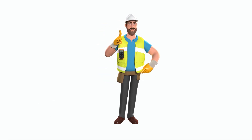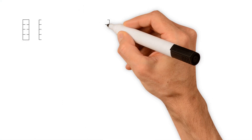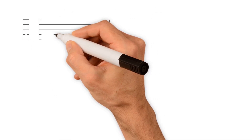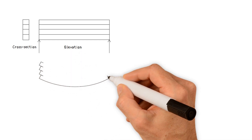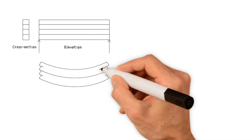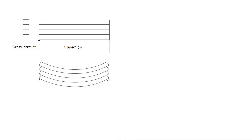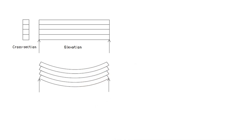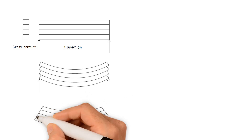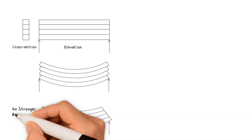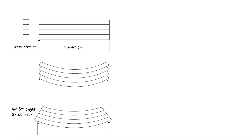A laminated timber beam, for example, is made up of four separate strips of wood. When a load is applied, if the strips are smooth and unconnected, the beam will deform. In effect, it behaves like four independent shallow beams. On the other hand, if the laminates are securely glued together, it deforms like a unified deep beam, which in this case is four times stronger and eight times stiffer than the unconnected beam.